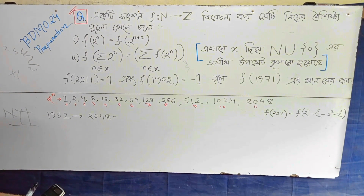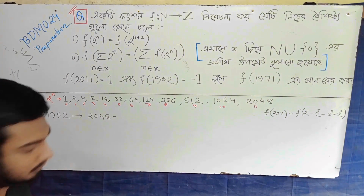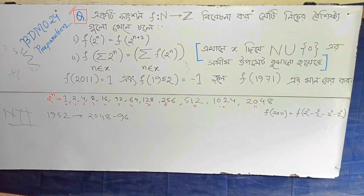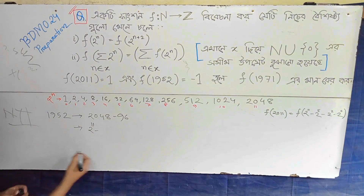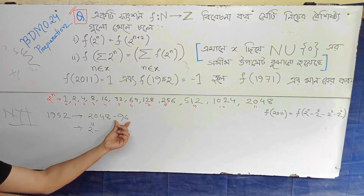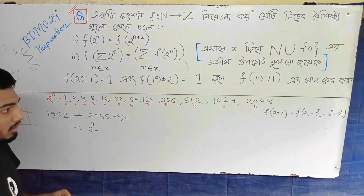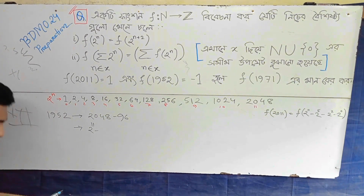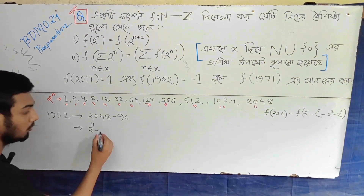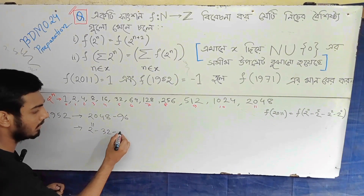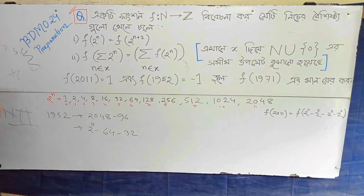So 2048 minus 1952, we can protect this value: 96. We are created by the 2 to the power, and this value has 2 to the power, and we can make 2 to the power 11. Let's take a look at the actual address: this is 64. So if you take a look at 96, then 64. So 96 minus 64 is 32. So 32 and 64 is 96. So 32 minus 64.